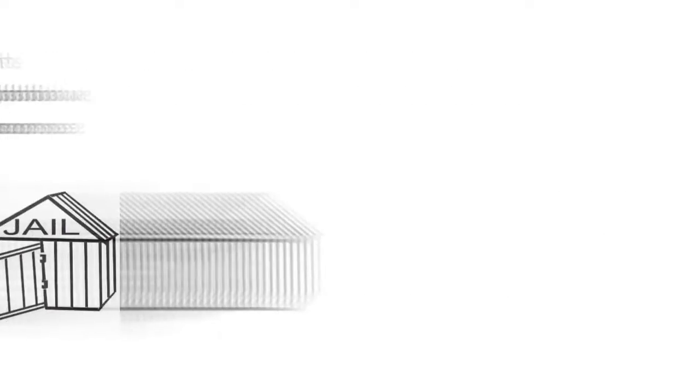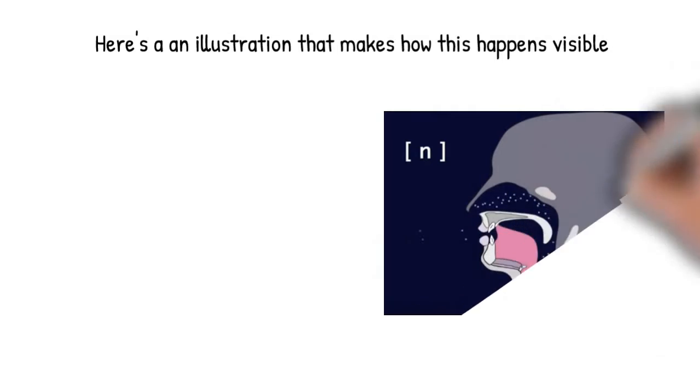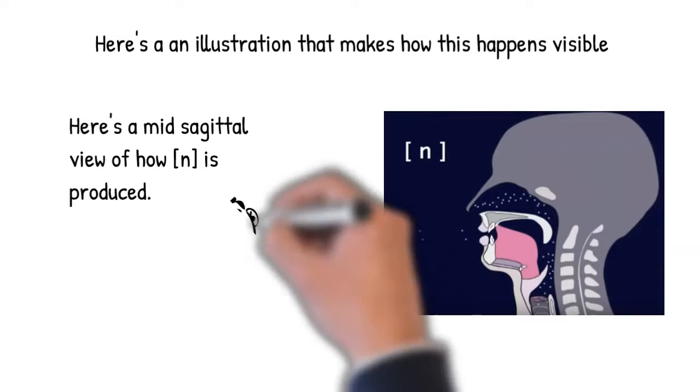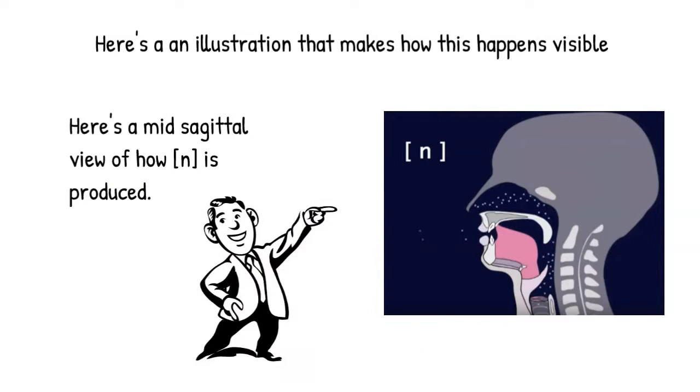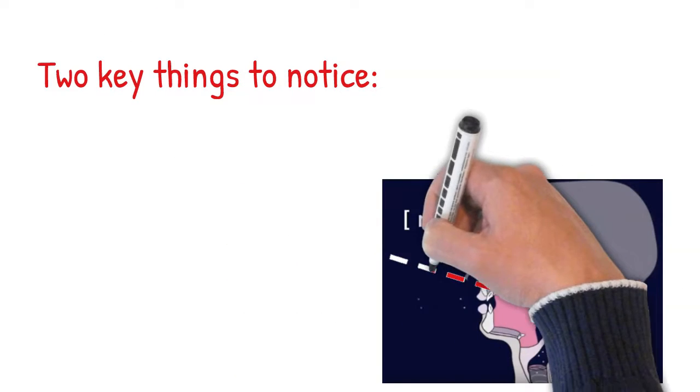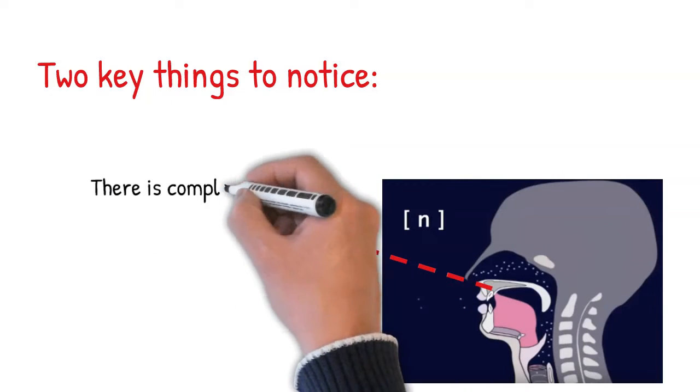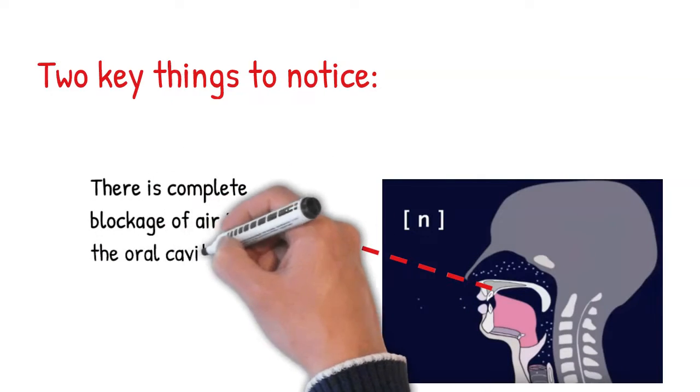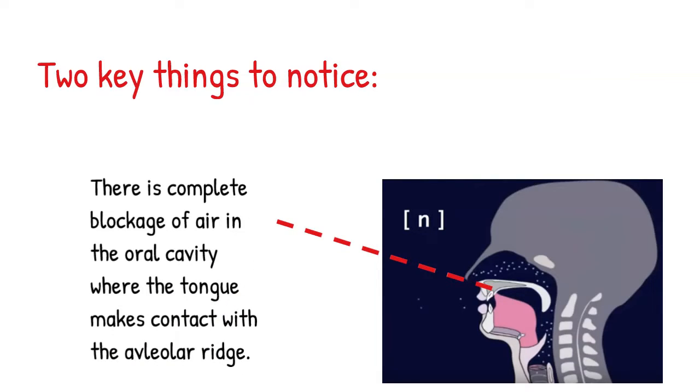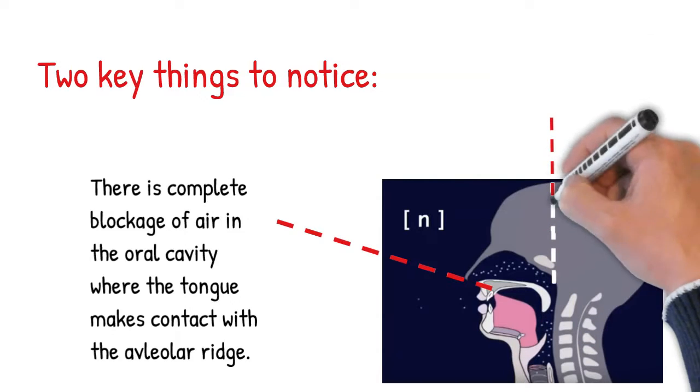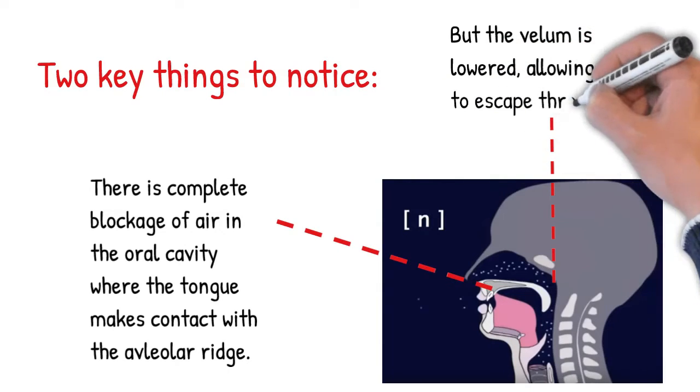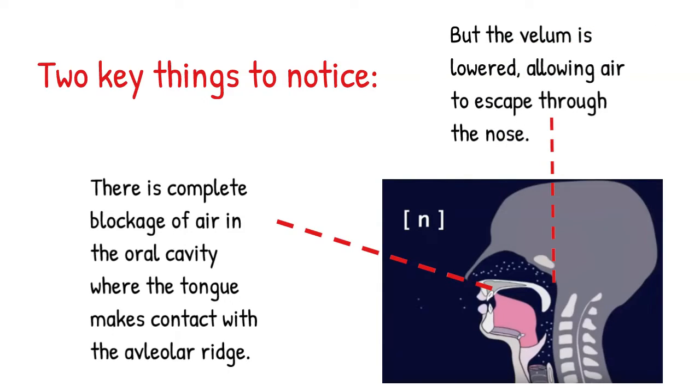So here's a picture of what's going on when we make a nasal consonant. In this case, we're looking at the production of the nasal sound N. There are two important things to notice in this picture. The first is that the tongue makes a complete constriction at the alveolar ridge. So in the oral sense, this sound is a stop. The second is that we can clearly see that during the articulation of the N sound, the velum is lowered, allowing air to pass into the nasal cavity and out the nose.